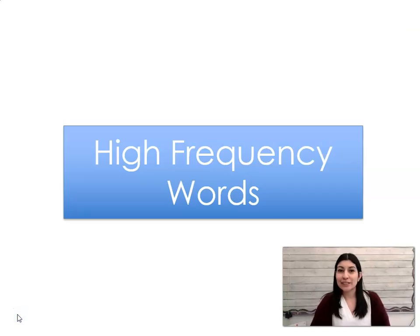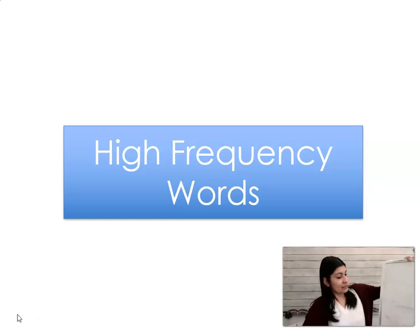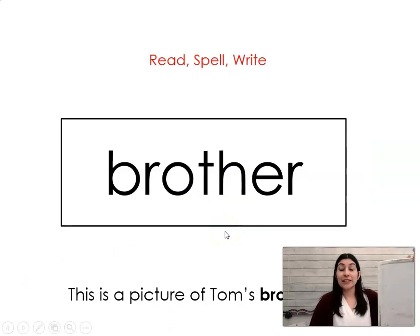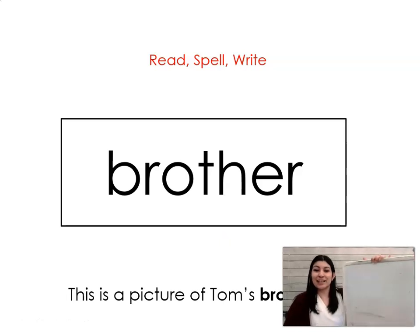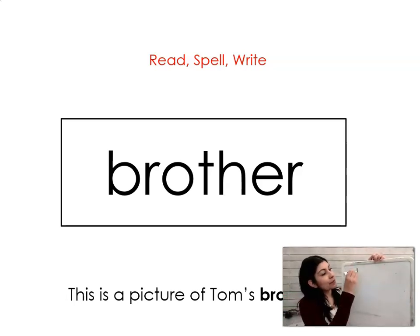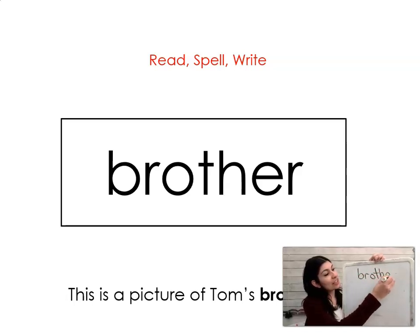Now we're going to practice reading some words that we just have to memorize how to read and spell. So let's get our whiteboard and our marker and let's practice spelling these words together. Ready? The first word is brother. Say it with me. Brother. This is a picture of Tom's brother, Tim. Let's spell it and write it together. B-R-O-T-H-E-R. Brother.